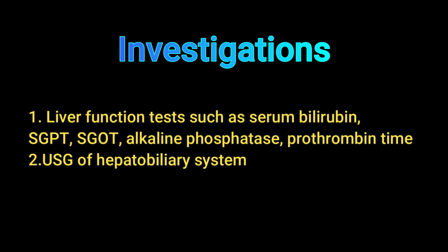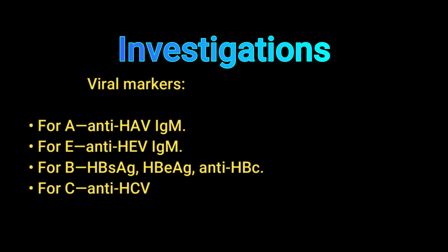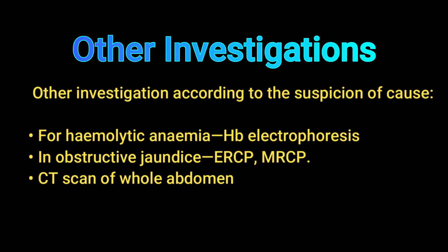For investigations, first order liver function tests including serum bilirubin, ALT (SGPT), AST (SGOT), alkaline phosphatase, and prothrombin time. Do an ultrasonogram of the hepatobiliary system. Also send viral markers for hepatotropic viruses: for hepatitis A, anti-HAV IgM; for hepatitis E, anti-HEV IgM; hepatitis B surface antigen, hepatitis B e-antigen, anti-HBc, or sometimes viral DNA load; and for hepatitis C, anti-HCV.